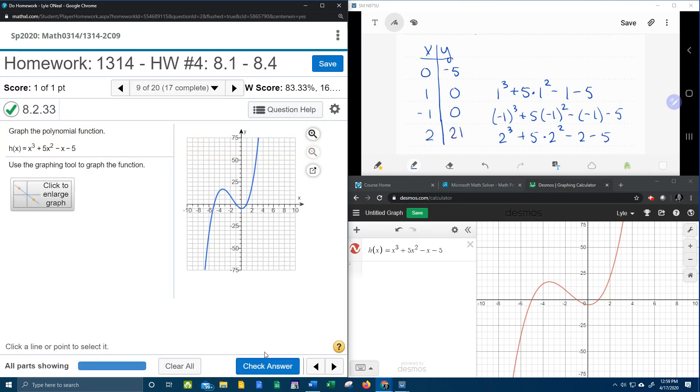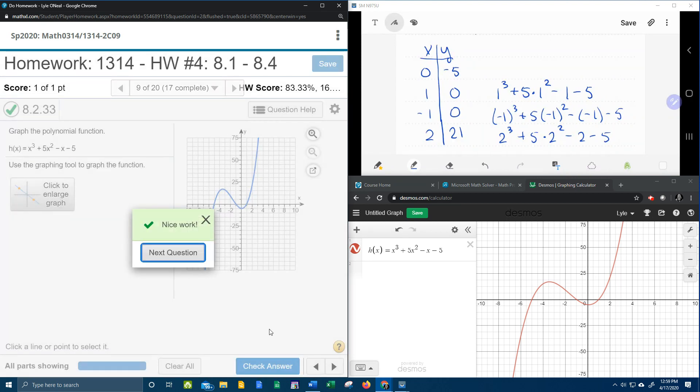And before I click check answer, I want to point out that I already have this graph over here in Desmos. I reset my window to the same size. So this is negative 10 to 10. And then up and down, it's negative 75 to 75. And if you look at this graph compared to this one, you'll see that they look almost identical. So that makes me feel good. Let's check it. And yeah, perfect.